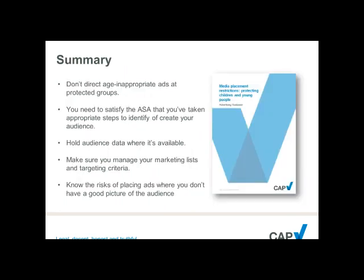In summary, don't direct age-inappropriate ads at protected groups under the media placement restrictions. The key is that you're going to have to satisfy the ASA — if challenged through a complaint — that you've taken the appropriate steps. Data is crucial; it is the golden ticket. It's also crucial to ensure that when you're using marketing lists and creating your audience through data, you're managing that appropriately and sorting your targeting criteria to ensure you have done as much as possible to exclude the groups protected by the restrictions.